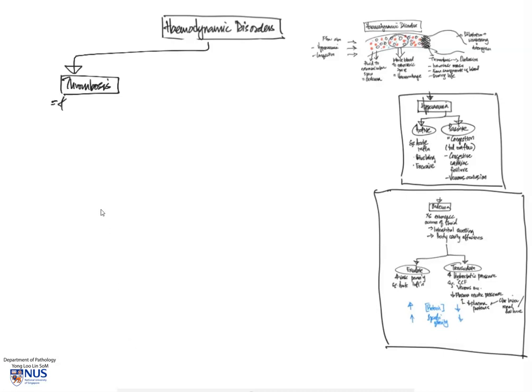So to start off with, let's always have a good definition. The definition of thrombosis is the formation of an intravascular mass within blood vessels during life from blood constituents.